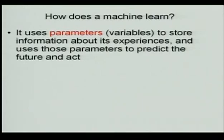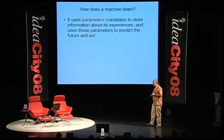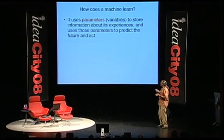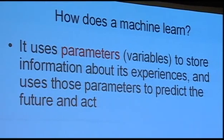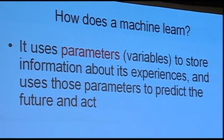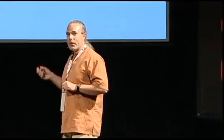So how does a machine learn? Sorting out information and making sense of it — that's a pretty fundamental task. What we do is introduce parameters: the machine has parameters inside it, variables you can think of as control knobs — dozens and dozens of control knobs that can be adjusted so as to store information about the experience that the machine has.